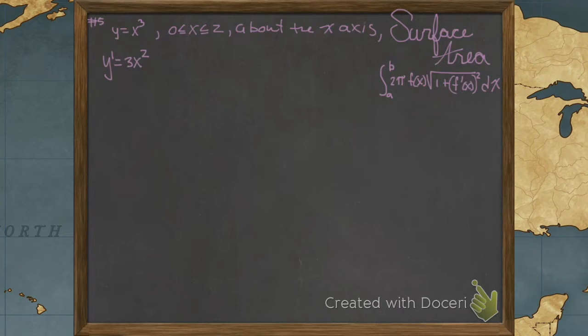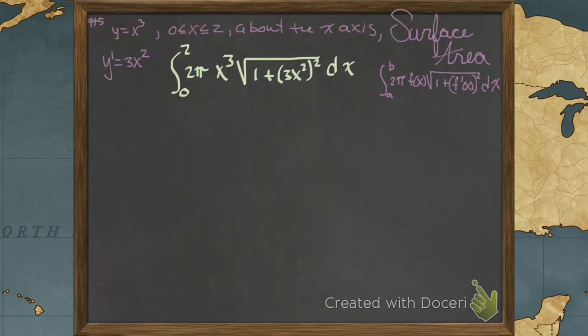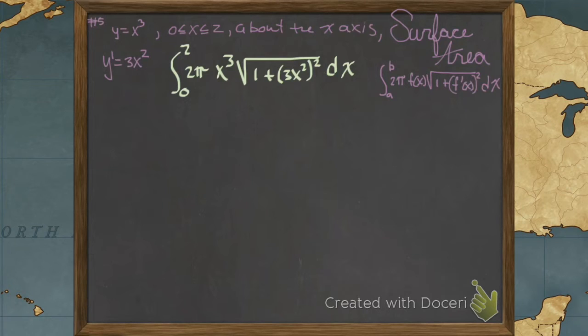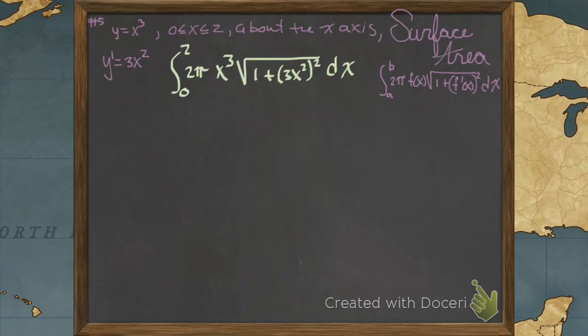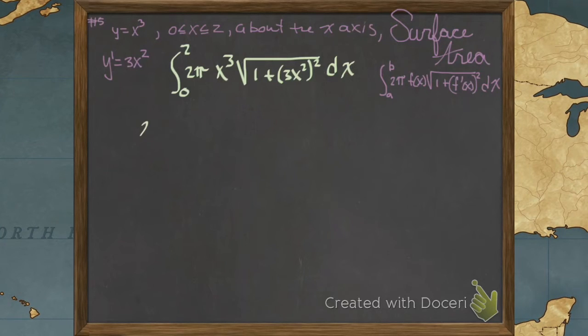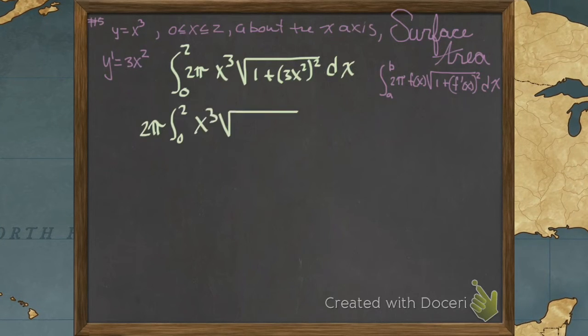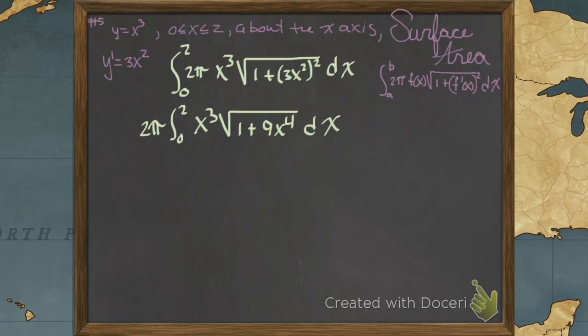So we need the derivative, and we get it. Our limits are from 0 to 2. That's 2 pi, our function was x to the third, and our arc length was 1 plus 3x squared, squared. And we're taking the root of that with respect to x. We're going to integrate from 0 to 2, and that's where we're at after we clean it up.